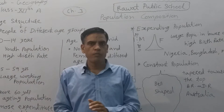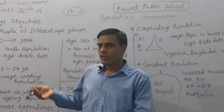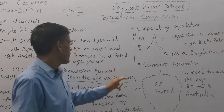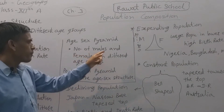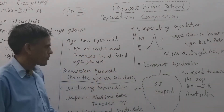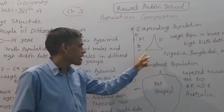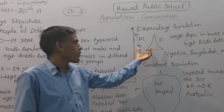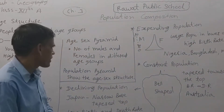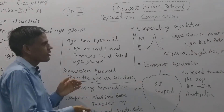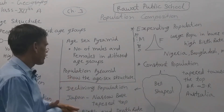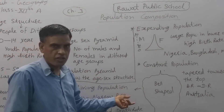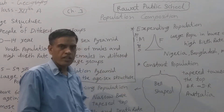In age structure there is no separation between male and female population — it is the calculation of overall population. But in the age-sex pyramid, the number of males and females in different age groups is shown separately in a graph. We show how many males and how many females are in the zero, 10, 20 year age groups — a comparison study between the male and female population. The population pyramid shows the age-sex structure.